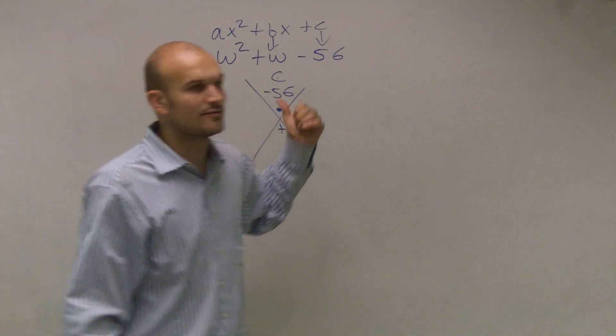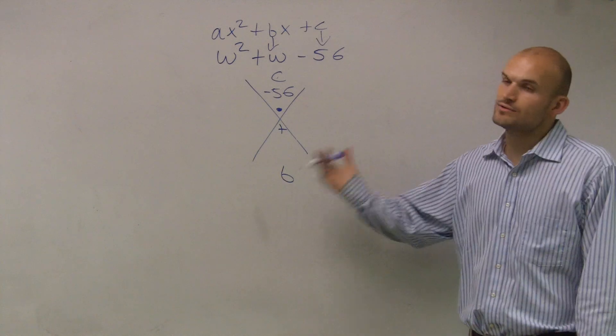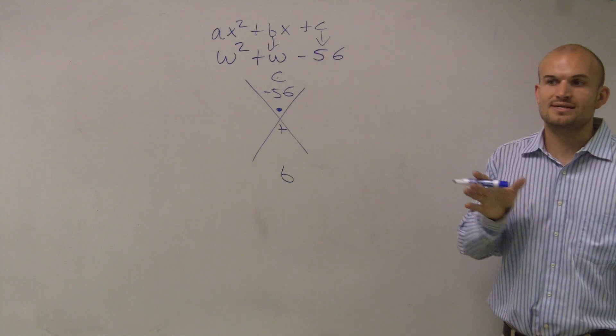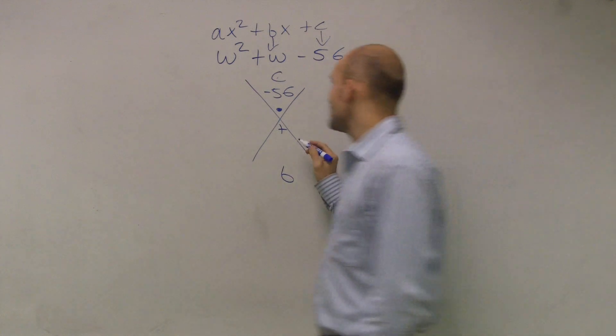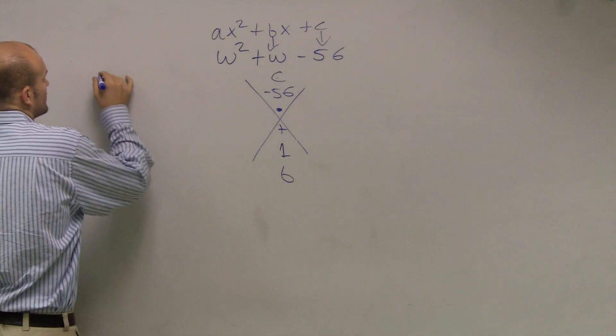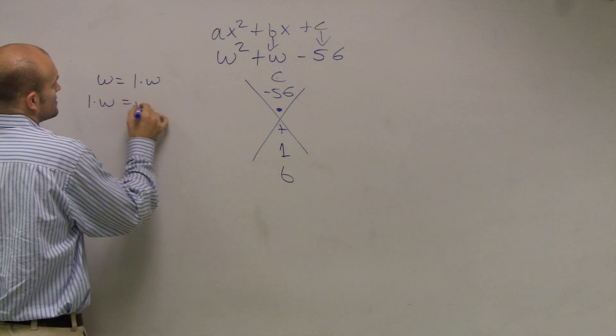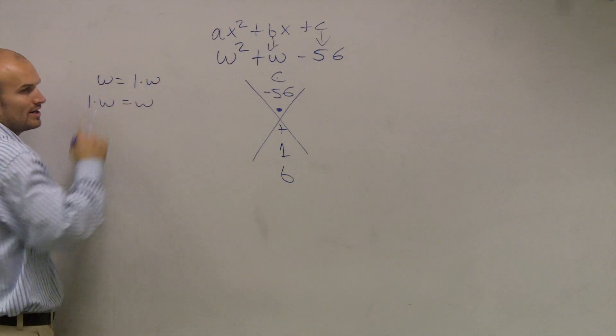Now we don't see a number in front of there like we usually have. So just remember, if you don't see a number in front, we can always remember that one times that variable is going to equal that variable. So my number actually in front is going to be a 1. Because w equals 1 times w, or 1 times w equals w. So if you're seeing this, understand that you can always have a 1 in front of you.